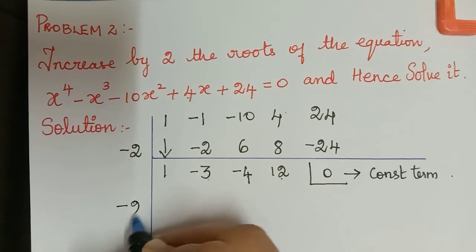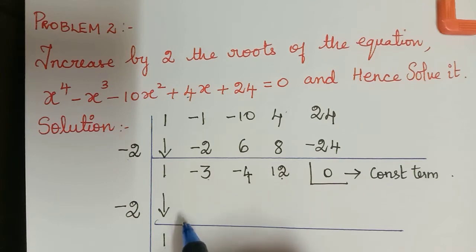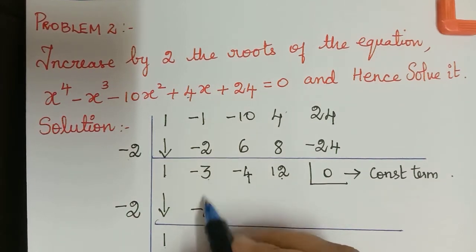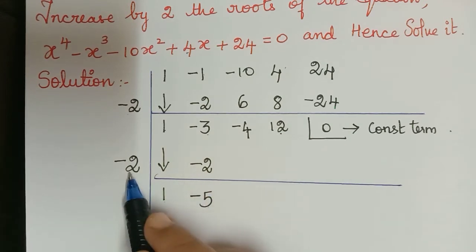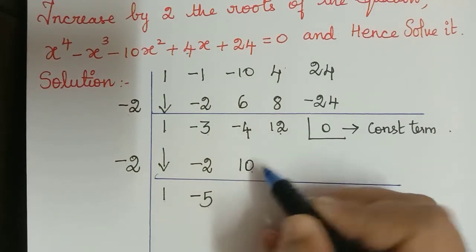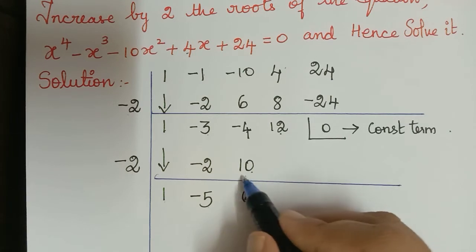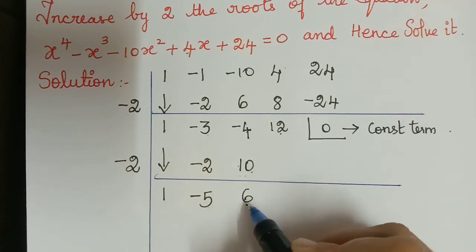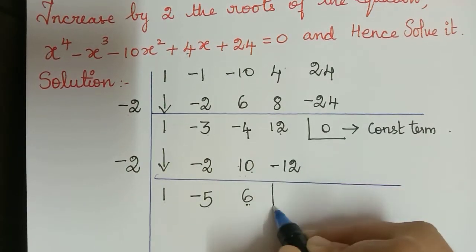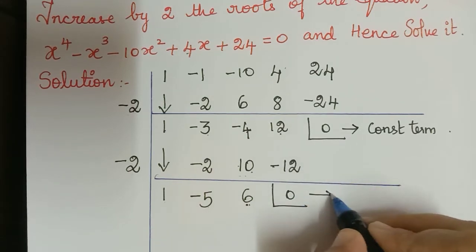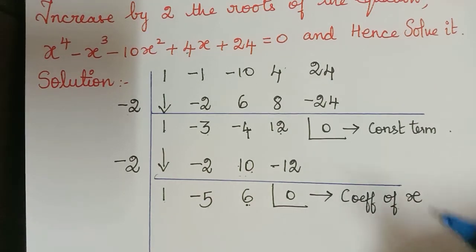Again we diminish by negative 2. This 1 comes down; negative 2 multiplied with 1 is negative 2, and adding gives negative 5. Negative 5 multiplied with negative 2 is 10. Adding negative 4 and 10, we subtract and the larger number is positive, giving positive 6. Then 6 multiplied with negative 2 is negative 12, and the remainder is again 0, meaning the coefficient of x is 0 — there is no x term.